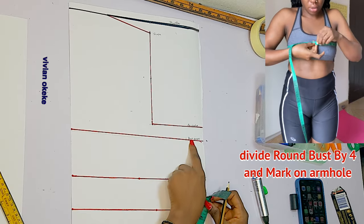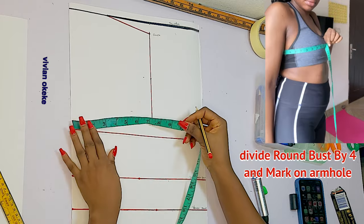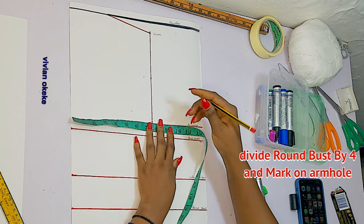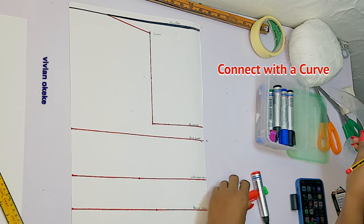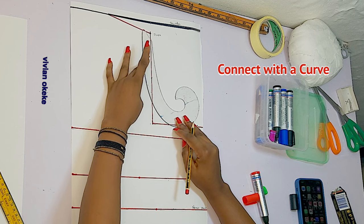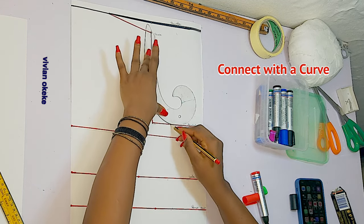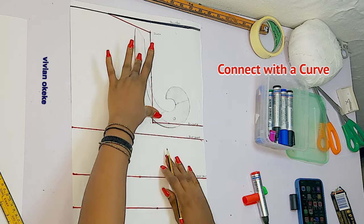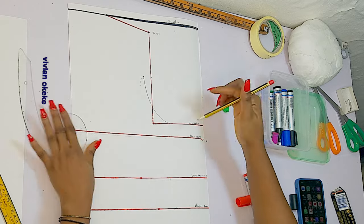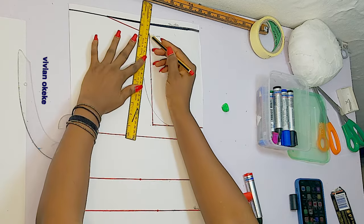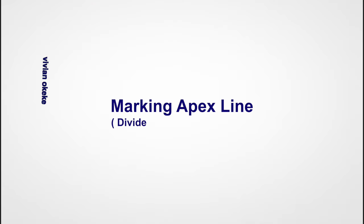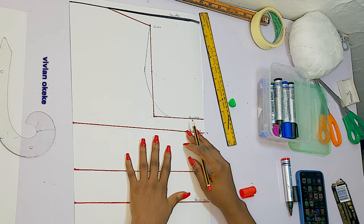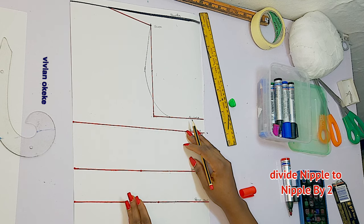Now I'll use my curve ruler to connect this. First, divide my round bust by four and mark this on the armhole line. Get your curve ruler and connect from that point to the middle point. If you don't have a curve ruler, use your freehand to create the curve. For the rest, use a straight ruler to connect to the slope — and we are done with the armhole curve.